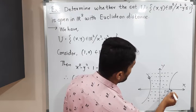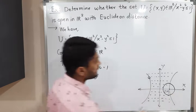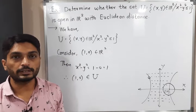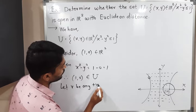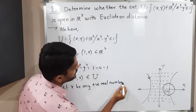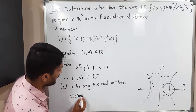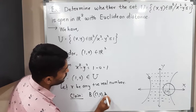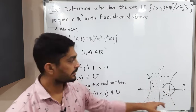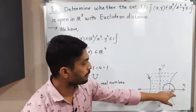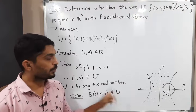Now, we will show that (1, 0) is an element of U. Our claim is: the open ball with center (1, 0) and radius R is not a subset of U. That means if you draw an open ball with center (1, 0) and radius R, it contains some points outside U. Let R be any positive real number — even a very small R. We need to find one point of this ball which is not in U.